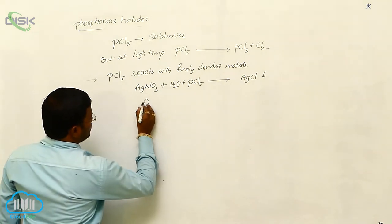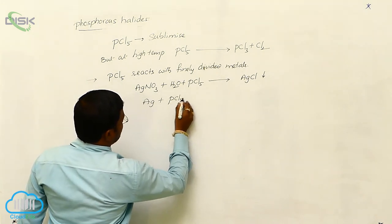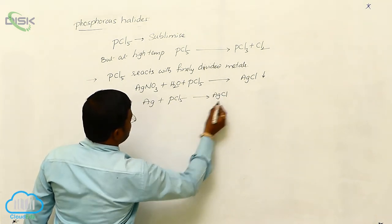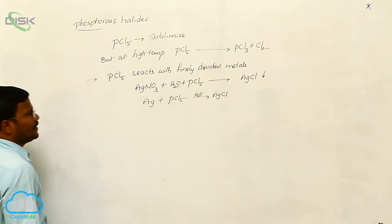Silver can also react with phosphorus pentachloride to produce AgCl in aqueous condition.